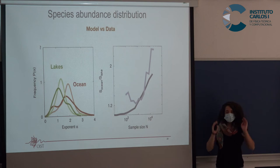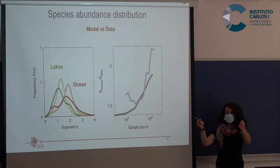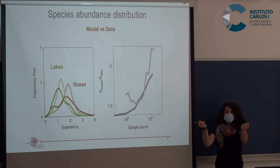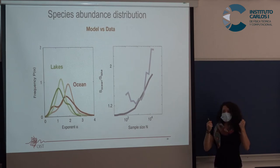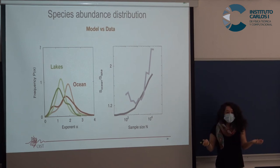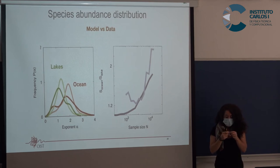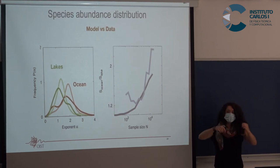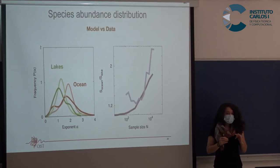Once we proposed a model and saw that it predicts quite well what happens in nature, we can think about why it reproduces it. Now that we have the model, we know exactly what is happening with the sample in time, with the flux, and can analyze everything.